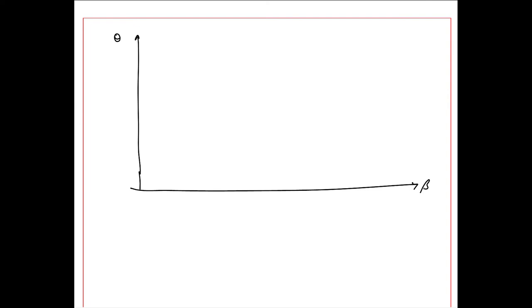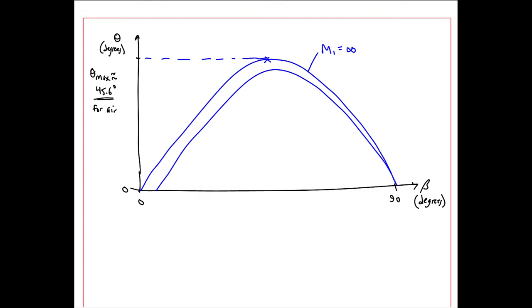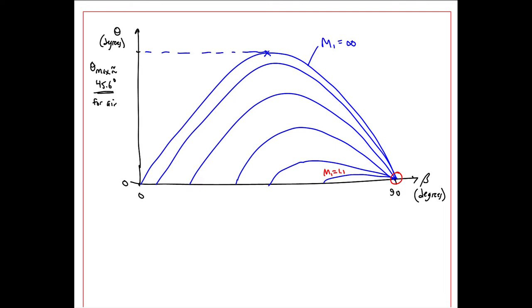I'll sketch it here. Typically, we plot theta versus beta where beta goes from 0 to 90 degrees. And theta, the turning angle, goes from 0 to some maximum, which is approximately 45.6 degrees for air, which is the maximum possible turning angle for an oblique shock in air. This occurs at a Mach number M1 of infinity. For Mach numbers less than infinity, the curve does not rise as high. But all of these curves go to 90 degrees on the right, which represents the normal shock. These small curves down here will be Mach numbers close to 1, and the curves get larger as M1 increases.